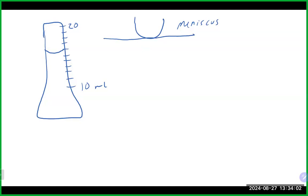We read typically from the bottom of the meniscus. The reason this happens is the attractive forces between the liquid and the glass container are stronger than the attractive forces between the liquid itself. So the liquid in contact with the glass rises through capillary action. That's why in a U-type meniscus we read from the bottom — the actual volume is where the liquid is not in contact with the glass. Not all substances give a U-meniscus; mercury actually goes the opposite way and you'd read from the top.